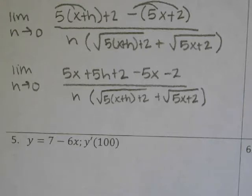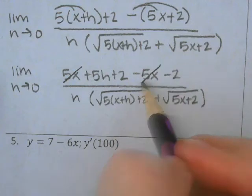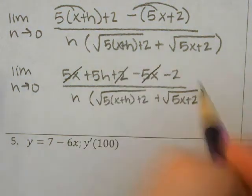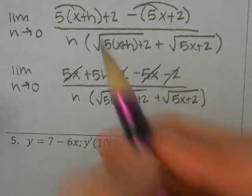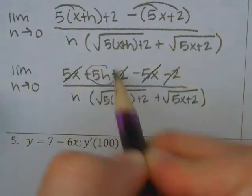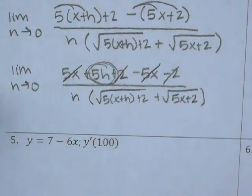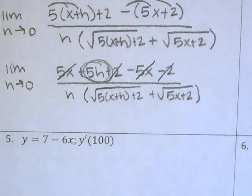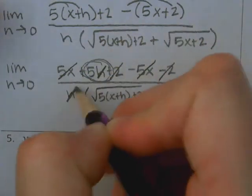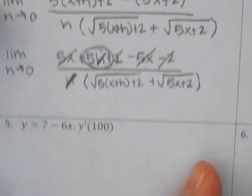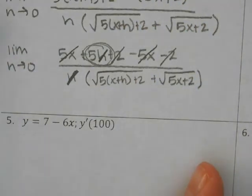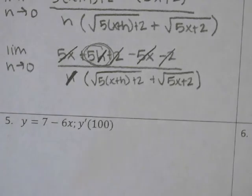So what cancels? 5x and 5x, 2 and 2. And since all we have left over on the top is a 5h — that's the only thing left — what can we cancel? The h. So we just have a 5 on the top, and then we have that stuff on the bottom, the messy stuff in the parentheses that has not disappeared.